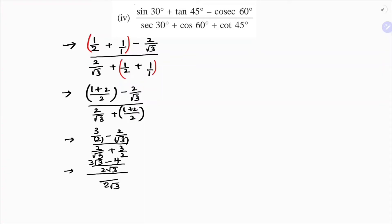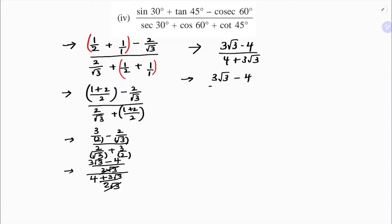For the denominator, the LCM is also 2√3. Here I have √3 so I multiply by 2, giving 4. Here I have 2 so I multiply by √3, giving 3√3. The 2√3 cancels, leaving (3√3 - 4) in the numerator and (4 + 3√3) in the denominator, which I rewrite as (3√3 - 4) divided by (3√3 + 4).